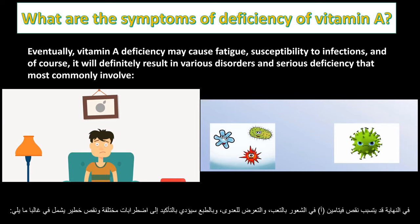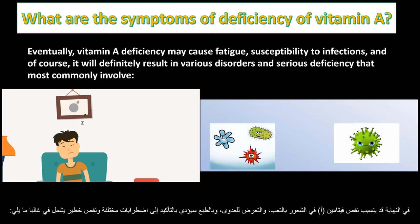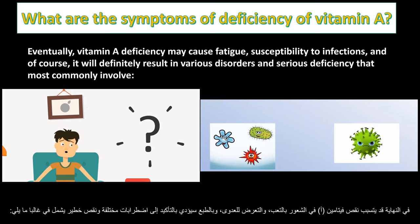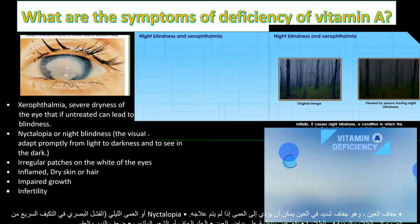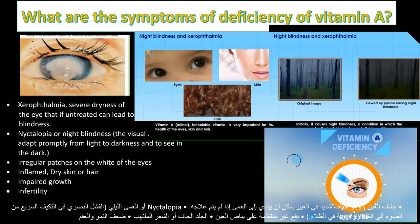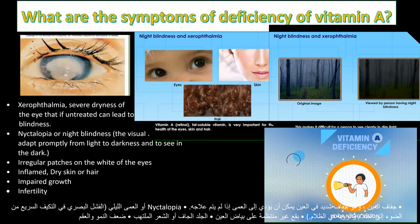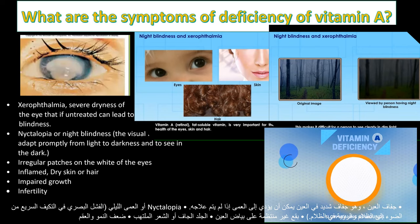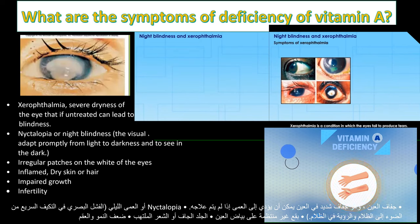susceptibility to infections, and it will definitely result in various disorders and serious deficiency that most commonly involve xerophthalmia — severe dryness of the eye that if untreated can lead to blindness — and nyctalopia, or night blindness, the visual failure to adapt promptly from light to darkness and to see in the dark.